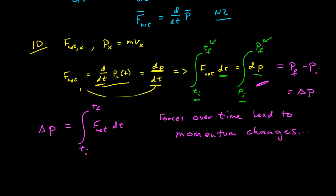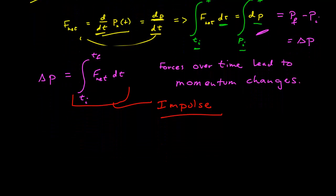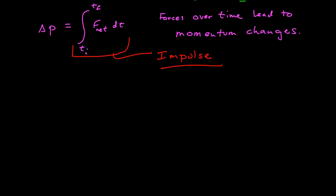This integral gets its own name: it's called the impulse. The time integral of the net force between two points in time equals the change in momentum. This is in one dimension, but it's important to note that these are still vectors — the direction is given by the sign, since there are only two possible directions in 1D. This is easily extended to multiple dimensions because impulse is a vector equal to the time integral of the net force vector.